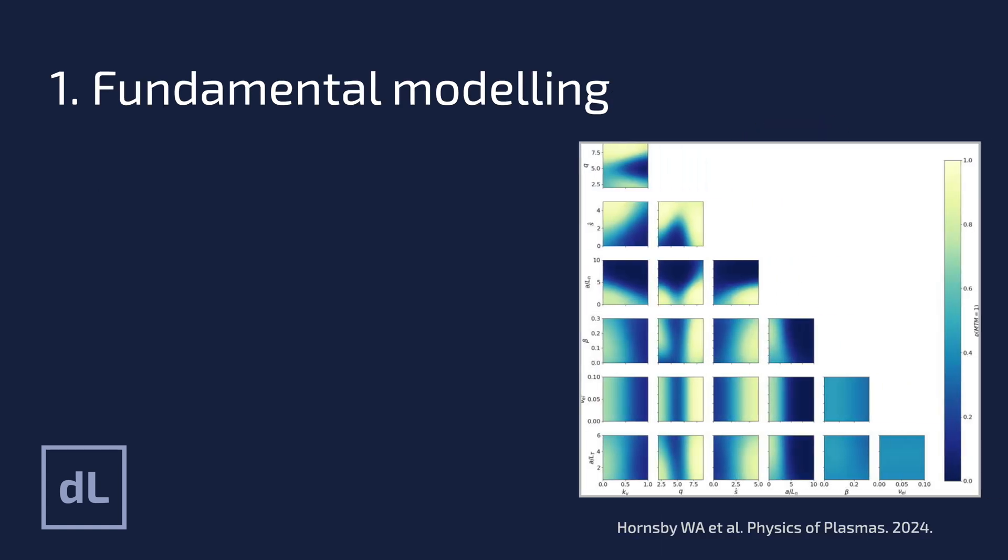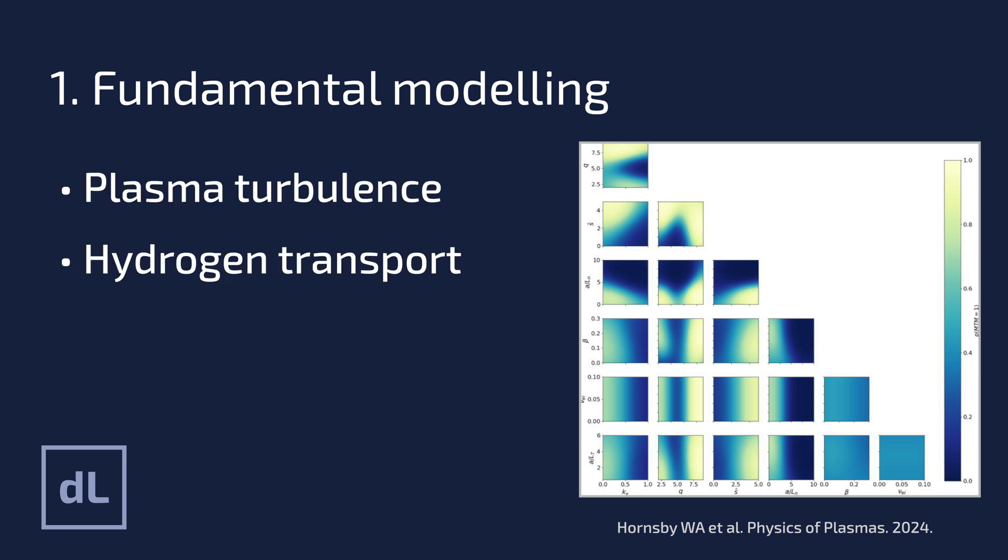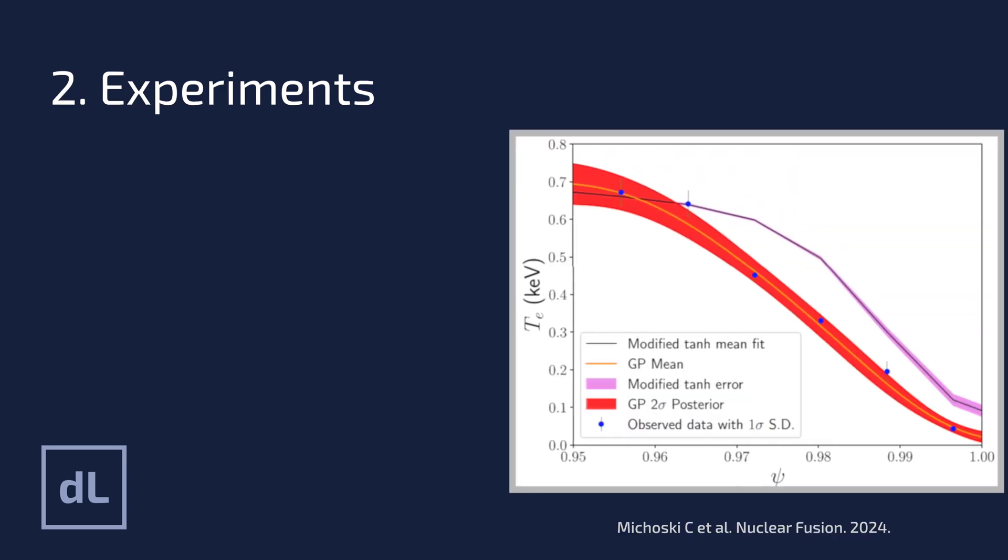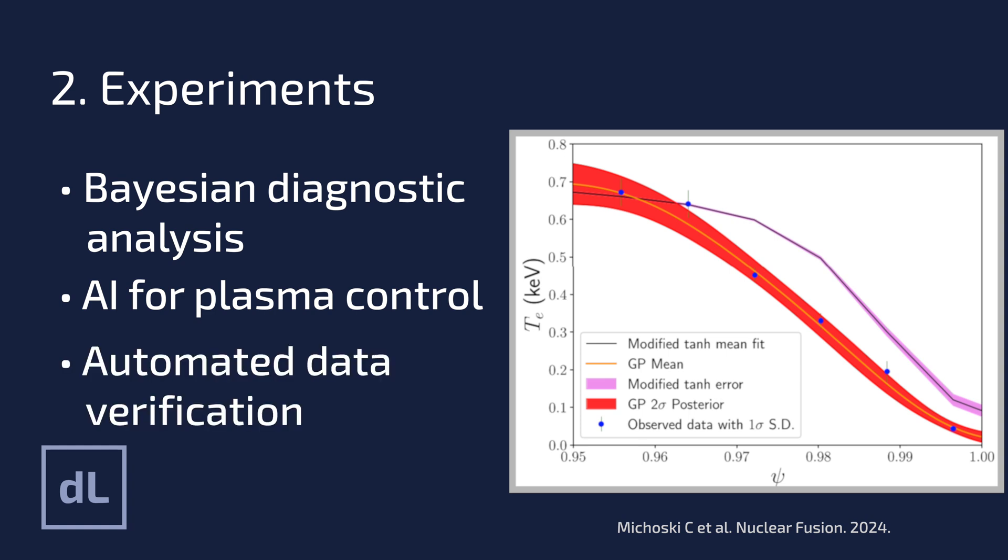We'll start by looking at how machine learning can aid more fundamental understanding of the science and engineering problems. And that could be modeling how turbulence in magnetic fusion devices impacts your confinement and your fusion performance. Then we'll look at how you can apply machine learning to aid the development of fusion experiments. Things like developing better analysis tools for diagnostics or more advanced techniques for plasma control.